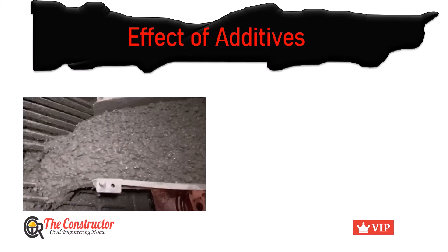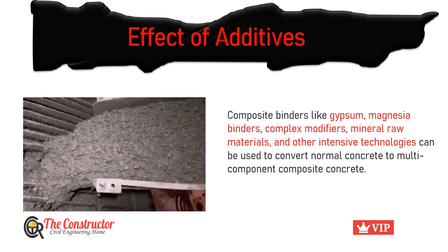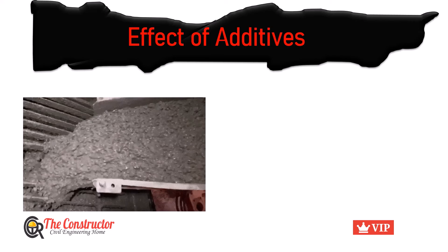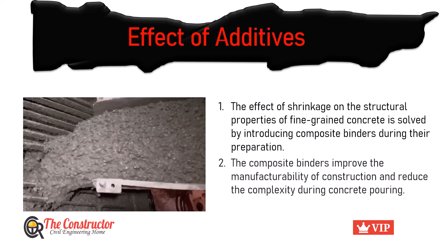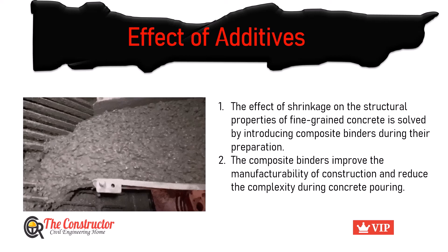Regarding the effect of additives on the properties of fine grain concrete: concrete is combined with multi-component systems instead of traditional materials to meet market economy demands and solve construction problems. Composite binders like gypsum, magnesia binders, complex modifiers, mineral raw materials, and other intensive technologies can convert normal concrete to multi-component composite concrete. The application of fine grain concrete in major civil and building construction is limited due to reduced shrinkage and crack resistance, which is addressed by introducing composite binders during preparation.